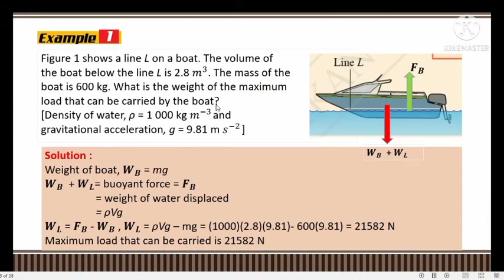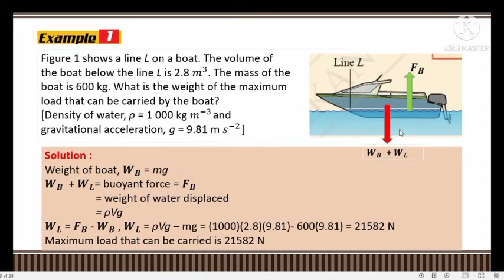Let's look at Example 1. Figure 1 shows a line L on a boat. The volume of the boat below line L is 2.8 m³. The mass of the boat is 600 kg. What is the weight of the maximum load that can be carried by the boat? Given: density of water = 1000 kg/m³ and gravitational acceleration g = 9.81 m/s².